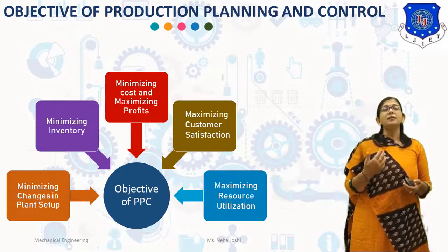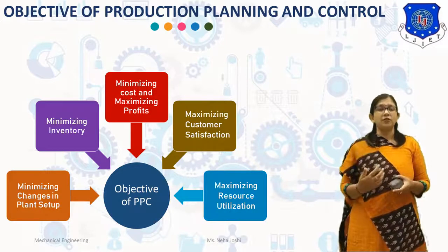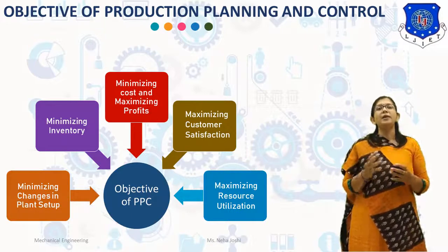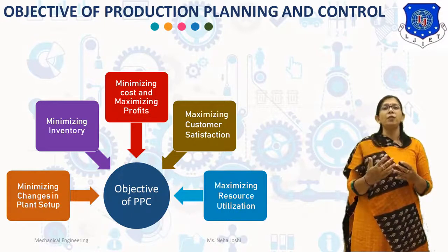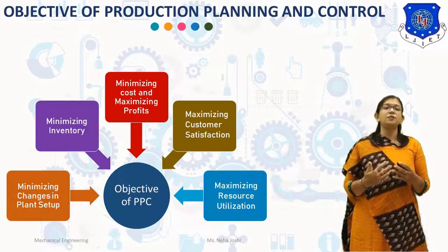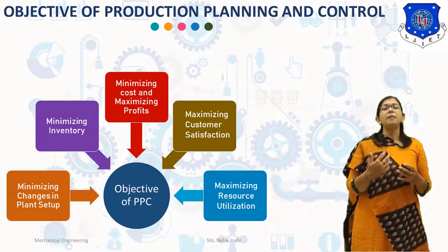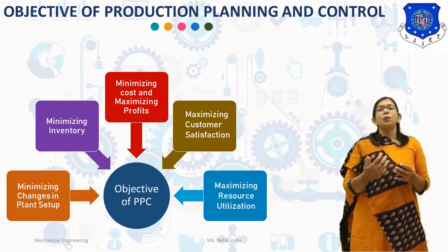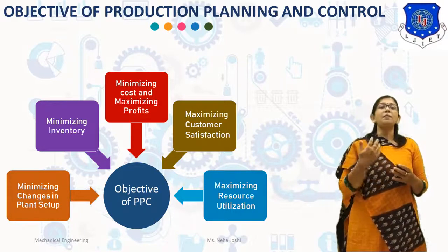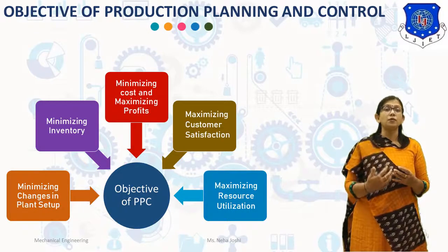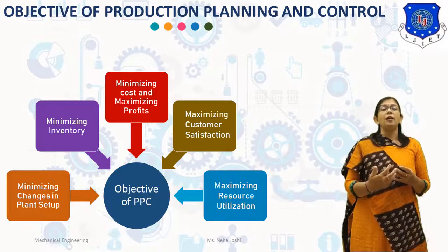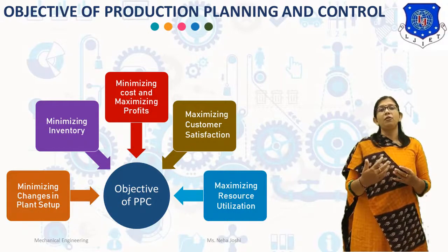The next objective is maximizing customer satisfaction. In today's buyer's market, satisfying the customer is the most important criteria for the success of the company. The third objective is maximizing resource utilization. The Production Planning and Control must aim at maximizing the utilization of available resources like factory machinery and workforce.